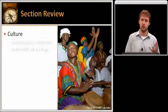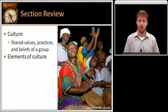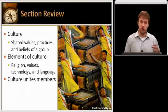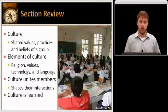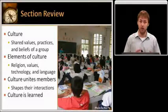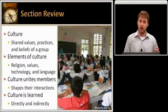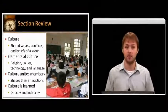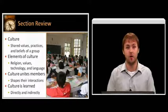Let's review this section. We introduced culture as the shared values, practices, and beliefs of a group of people. There are many elements of culture, such as religion, values, technology, and language. Culture is a uniting force — it unites members of a group and shapes their interactions with the environment, with other people in that group, as well as with people from outside of that culture. And culture is learned not only directly through family members, teachers, and coaches, but also indirectly through imitation and observation. That is it for section one of our lesson on the elements of culture. Thank you for your attention — I hope you've learned something new.